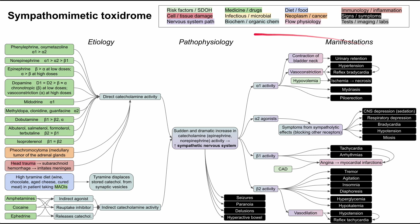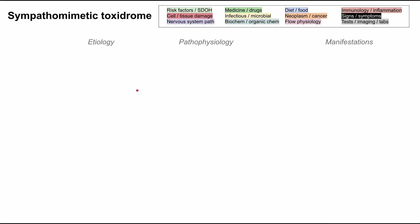As in all of these flowcharts, each of the boxes is color-coded according to the legend in the top right. Let's go ahead and clear all these boxes and repopulate them one by one as we talk through the mechanism of disease for sympathomimetic toxidrome. First, let's start off with the central pathophysiology.